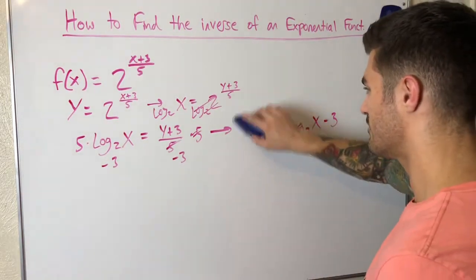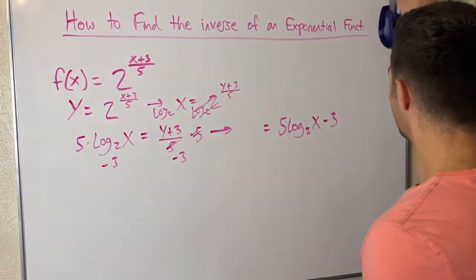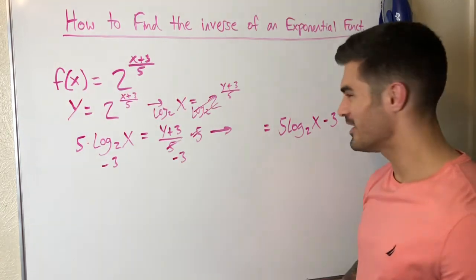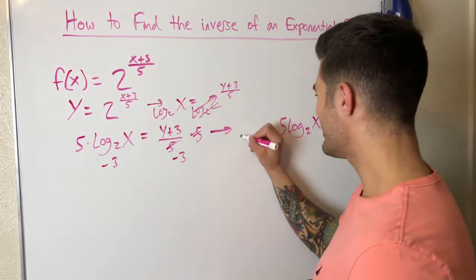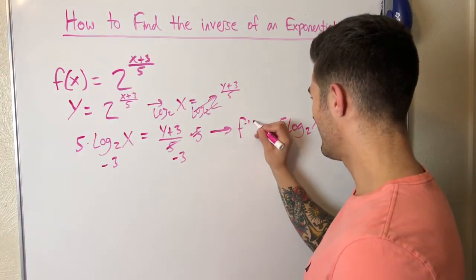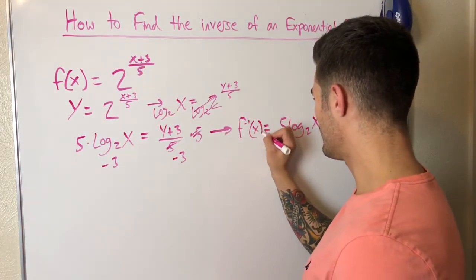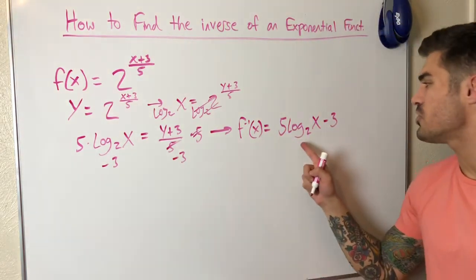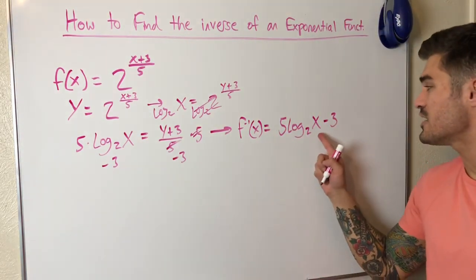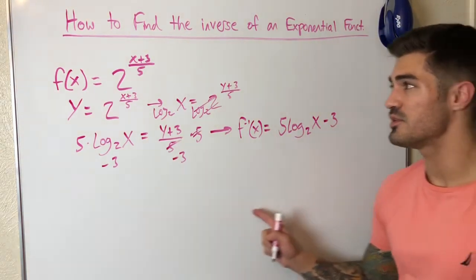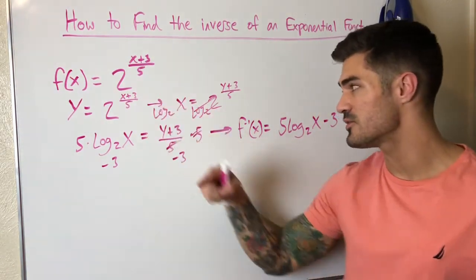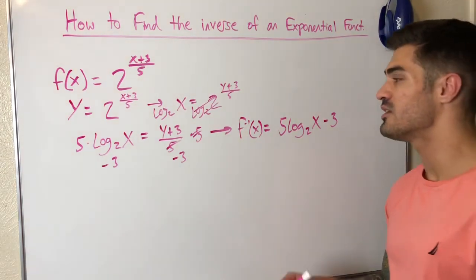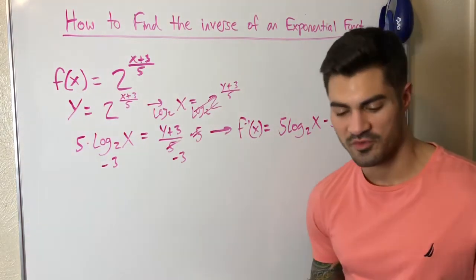So the inverse is f inverse of x equals 5 times log base 2 of x minus 3. If I plug the original function in for x, I get x when I simplify.